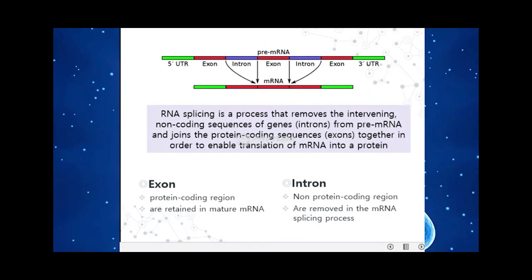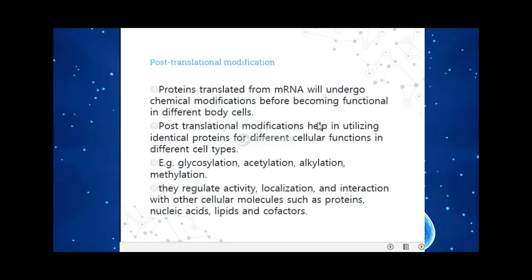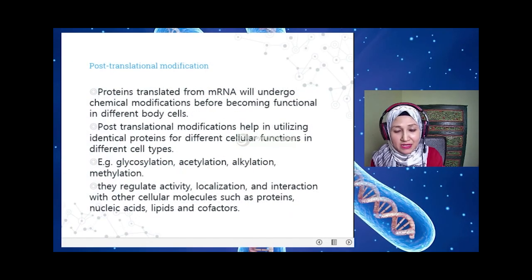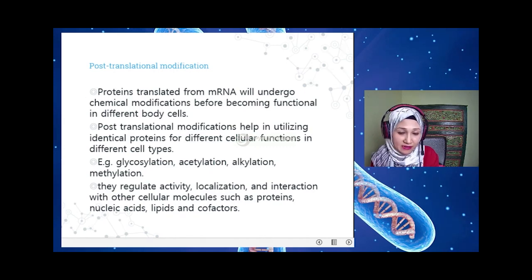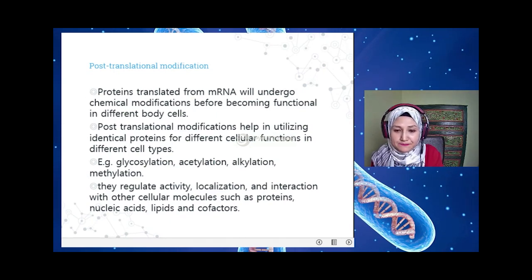RNA splicing is the process that removes the intervening non-coding sequences — the introns — from pre-mRNA and joins together only the exonic regions of the mRNA. Post-translational modification means the proteins translated from mRNA must undergo certain modifications before becoming fully functional in the body. These modifications include glycosylation, acetylation, alkylation, methylation, and other processes that assist in protein identification and cellular function.